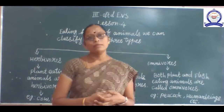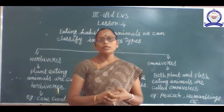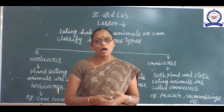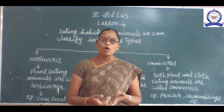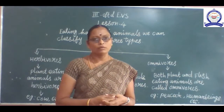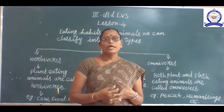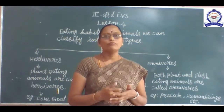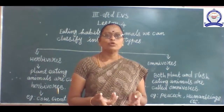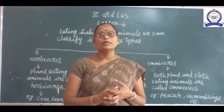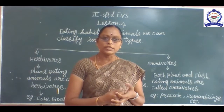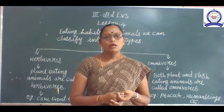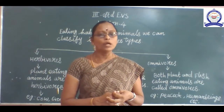Milk-giving animals: animals like cows, buffalos, and goats give us milk. They need milk-producing food, so they should be fed on grass and oil seed cakes. Oil seed cake is called 'punnaku' in Tamil.